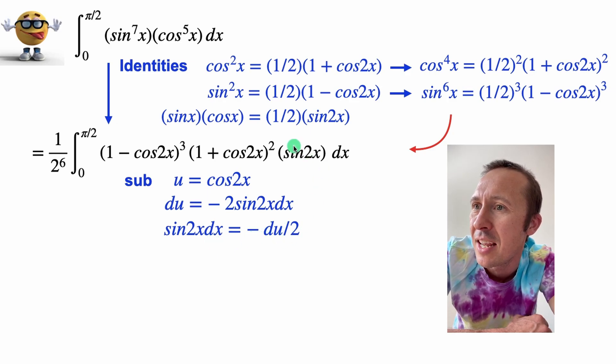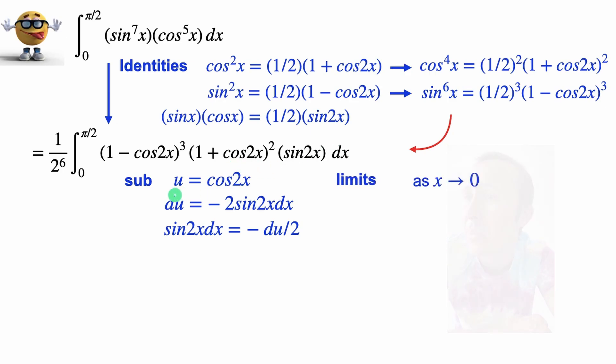And this part is now our du. We just need to rearrange it: sine 2x dx equals negative du over two. So we're going to substitute this in, and everywhere there's a cos 2x, I put in a u.